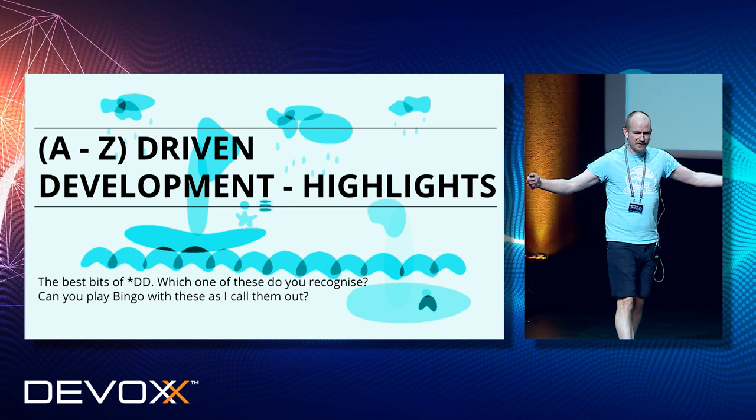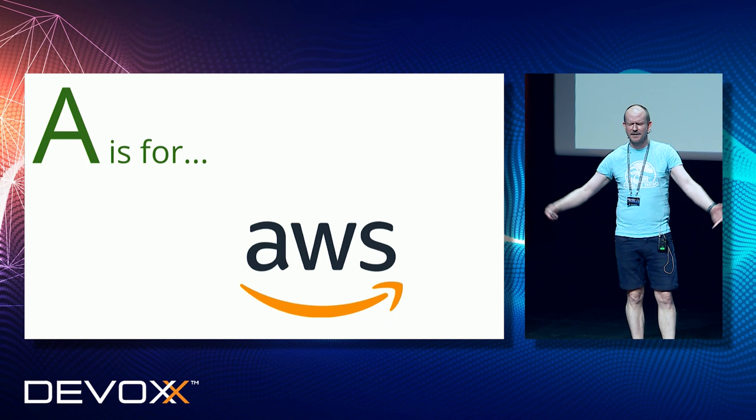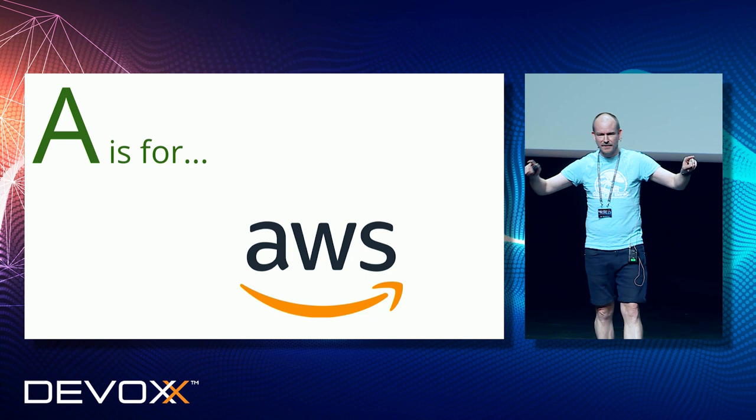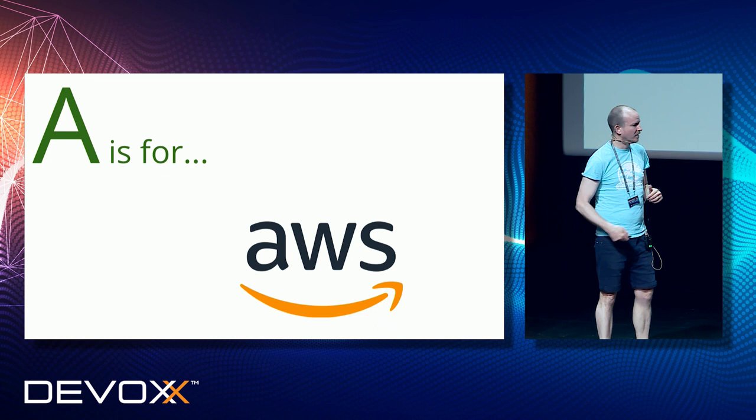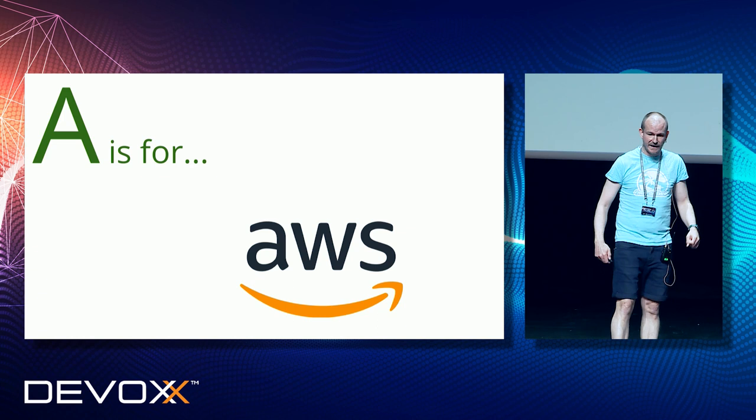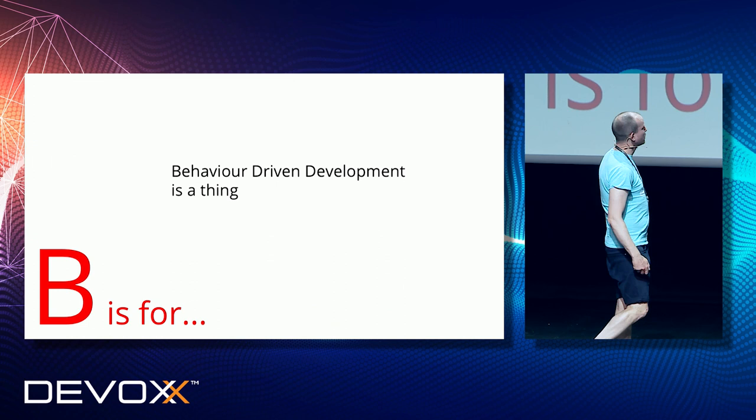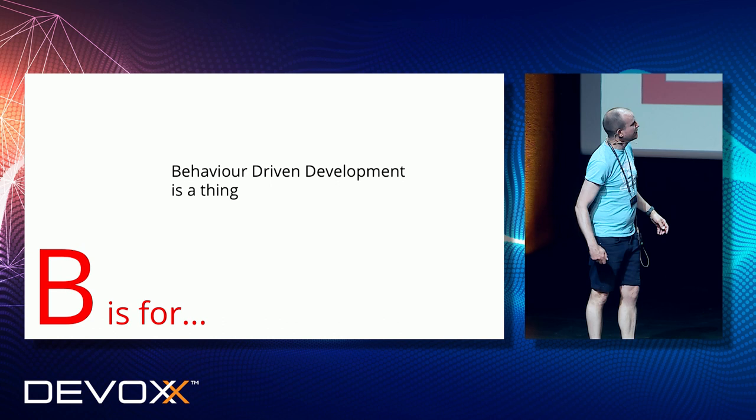This is the A to Z of driven development. A stands for AWS-driven development. This is when you can do anything you like as long as there is an AWS tool for it. You can use a database in RDS, but it has to be one of the ones they've got. Kafka you can use now, because there is a version of Kafka on AWS. And of course you can use Kubernetes, because there's EKS. But you can't use anything else. Of course, that does lead to massive vendor lock-in, which is quite dysfunctional.